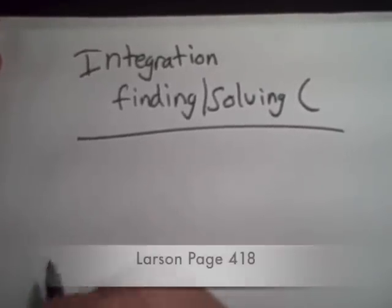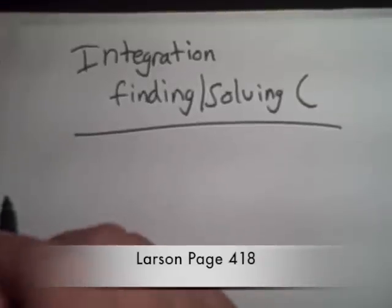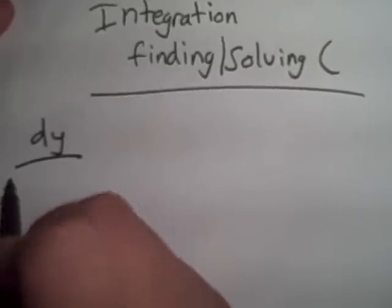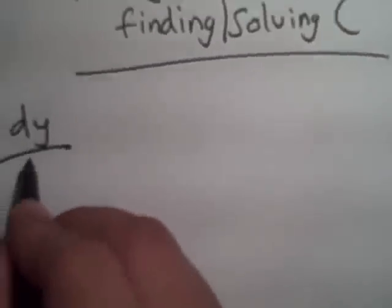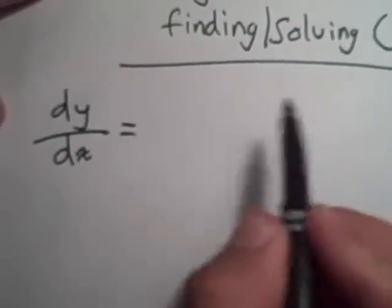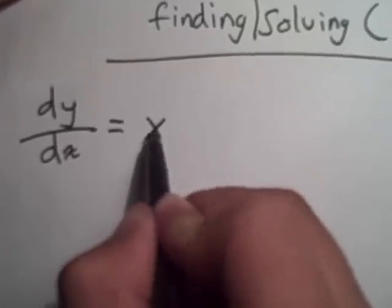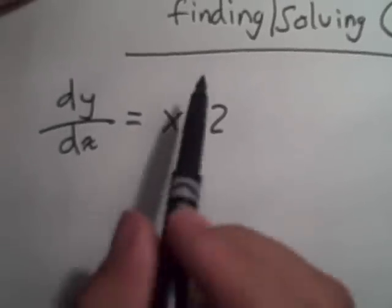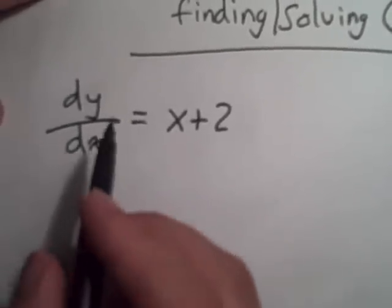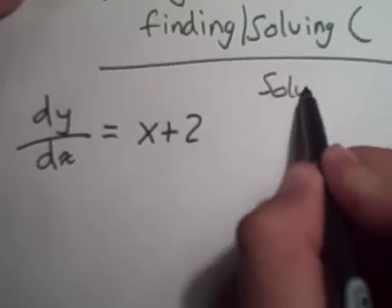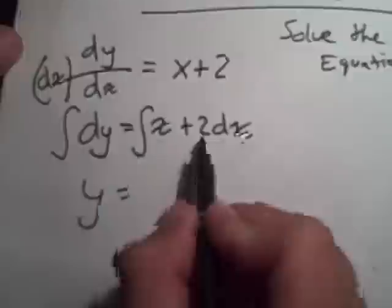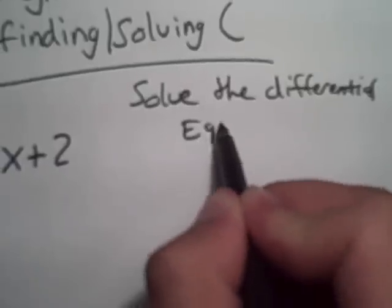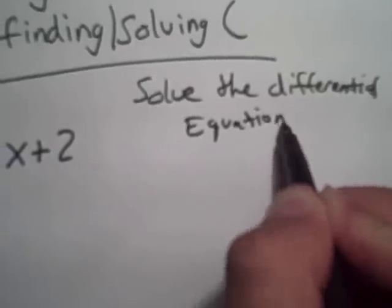Let's start with a simple problem in our Larson book page 418. You get the question dy over dx equals x plus 2. So when they give us this we know that we have to integrate. And the question asks us to solve the differential equation.